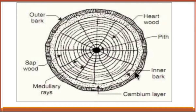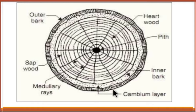Next is inner bark. The inner bark is the layer which protects the cambium layer. If the cambium layer is exposed to the atmosphere, there may be chances of decaying of timber from atmospheric agents like rain, water, insects, fungi, or bacteria. So the inner bark helps to protect this cambium layer.